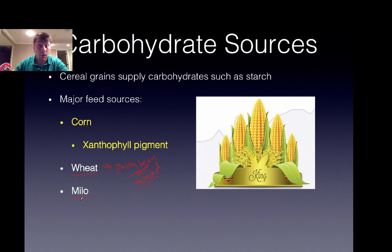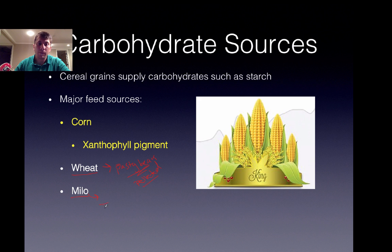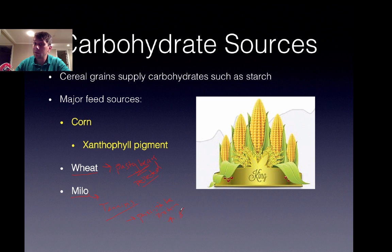Another potential carbohydrate source is Milo or sorghum. This is a very drought-resistant crop grown throughout the U.S. and the world, but it probably shouldn't be used in very high amounts because it contains tannins. These tannins can precipitate protein, which would cause you to increase your protein source content — the expensive component. If you've had a sip of wine and noticed a dry sensation, that's typically from tannins.